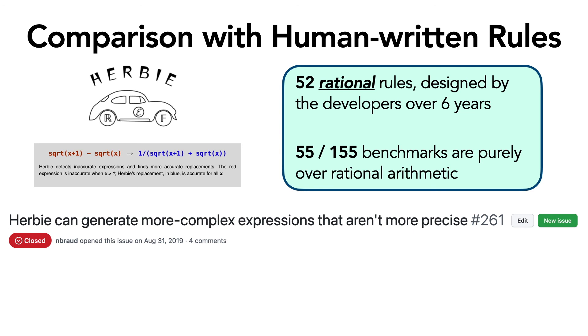So for example, here we have an issue, and Ruler was actually able to resolve this issue. Ruler found these two rules over rationals, and when we gave these two rules to the Herbie developers, they added it to their rule set because the rule set was missing these two rules. And then when we ran Herbie again, the issue raised by the user here was resolved.